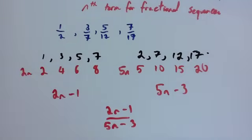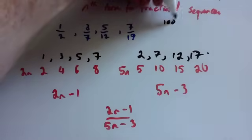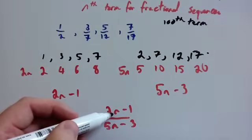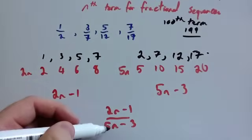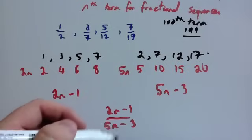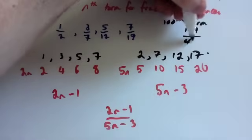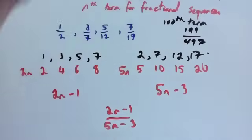Let's say we wanted to work out the hundredth term in the sequence. For the hundredth term, we've got two times a hundred — two hundred — take away one, which would be a hundred and ninety-nine, over five times a hundred — five hundred — take away three, which would be four hundred and ninety-seven. So the hundredth term in the sequence is one hundred and ninety-nine over four hundred and ninety-seven.